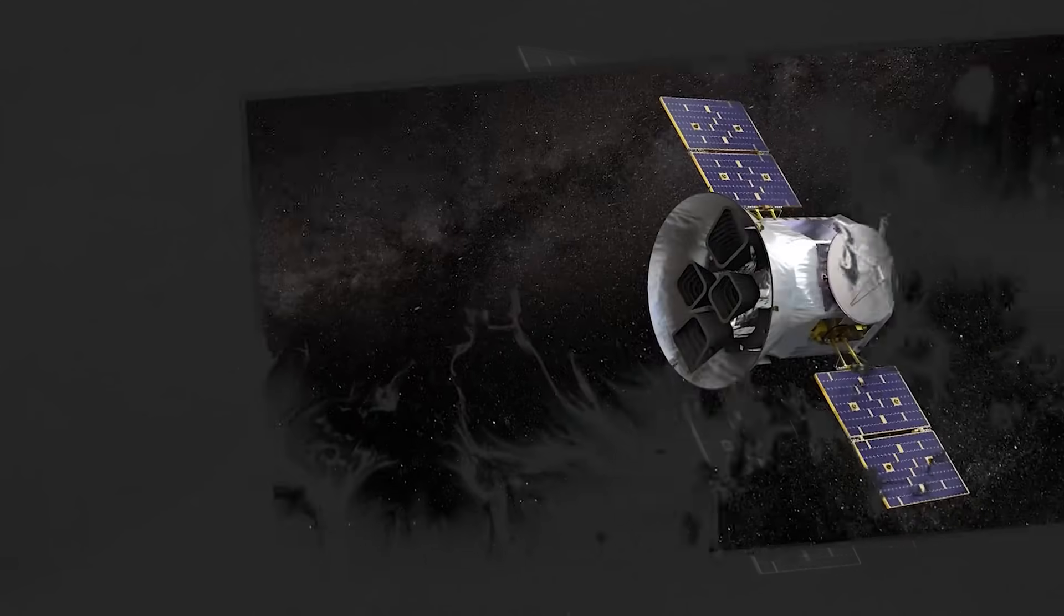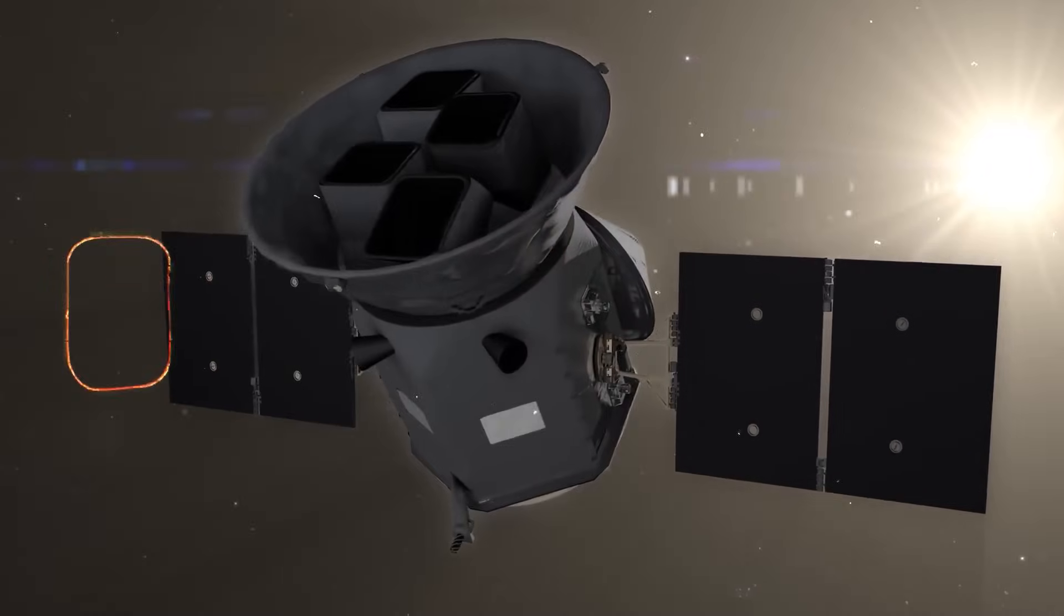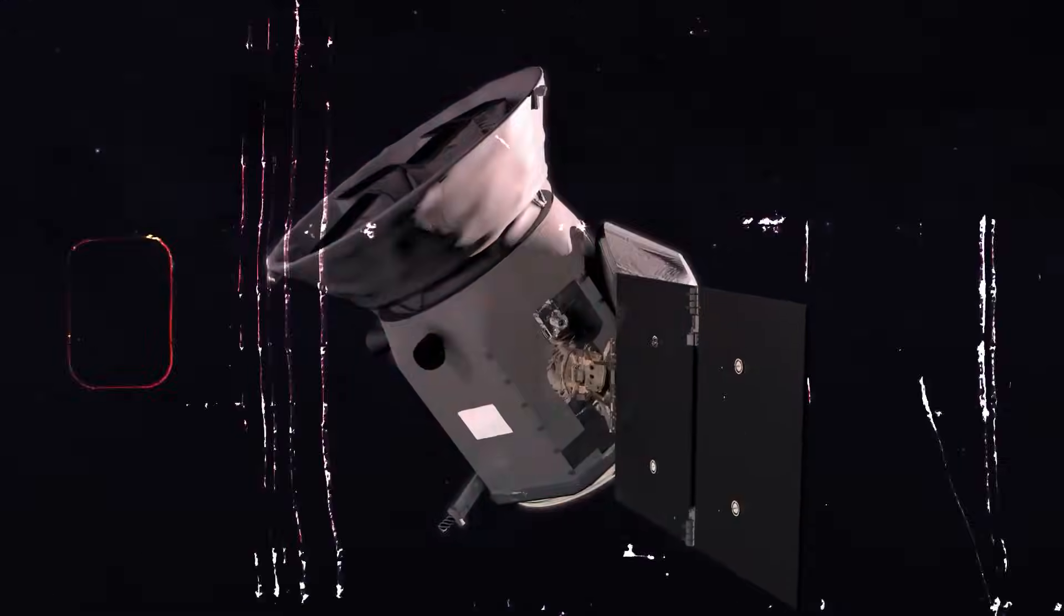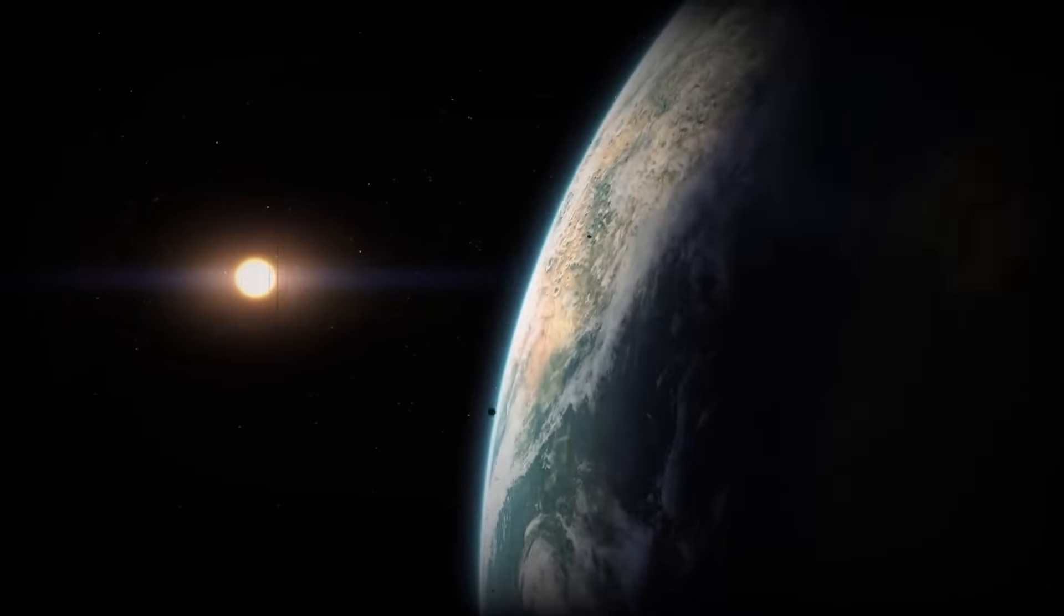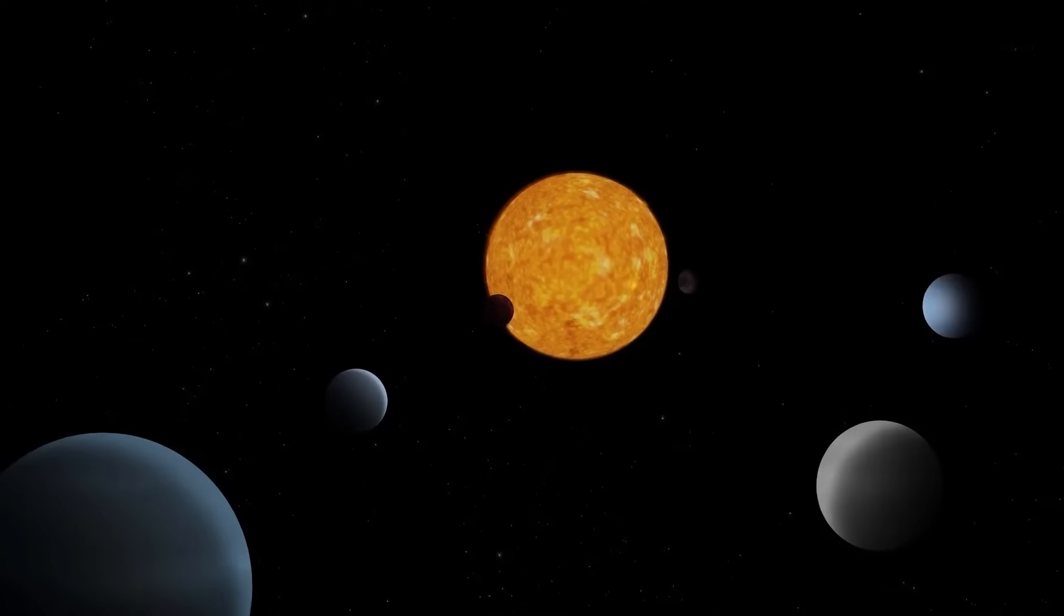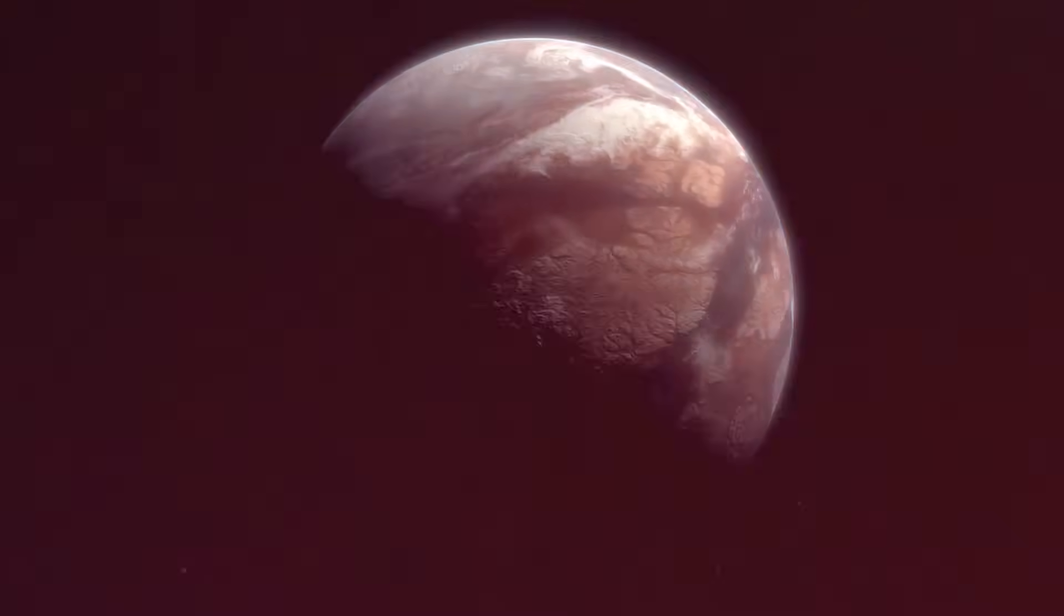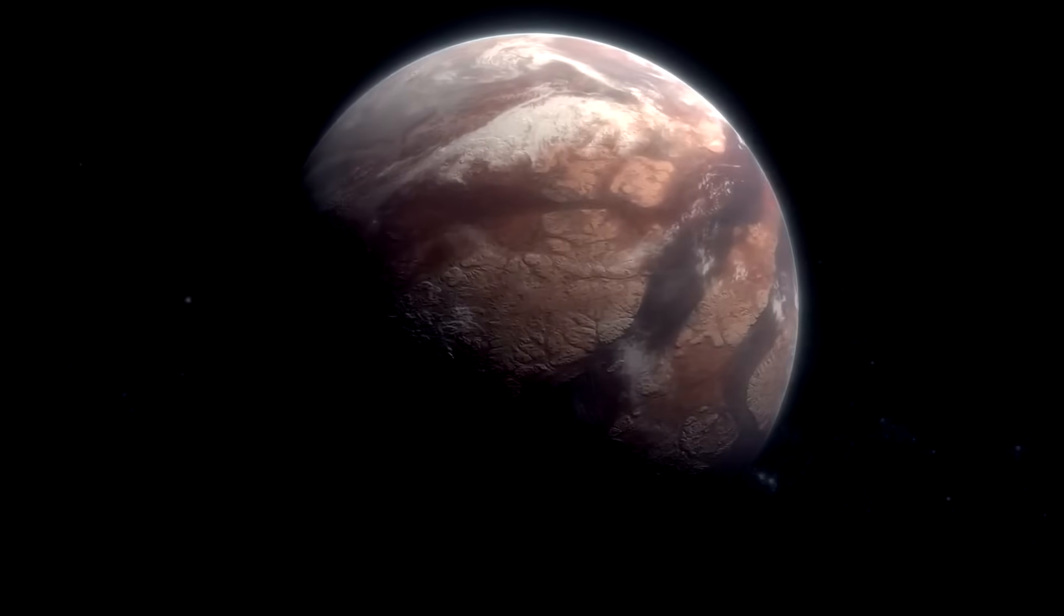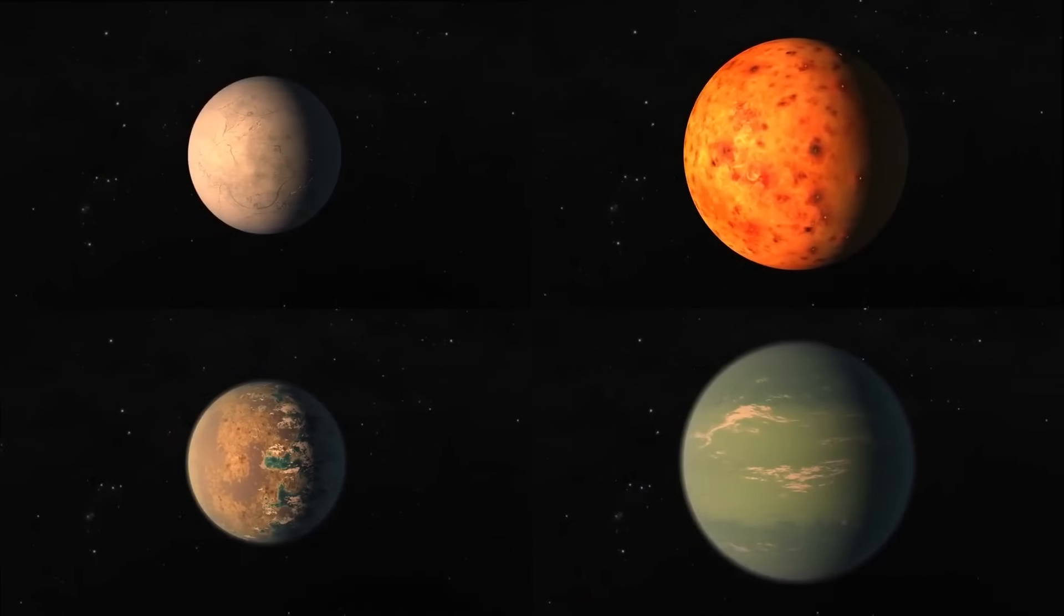The discovery was made possible by NASA's TESS, the Transiting Exoplanet Survey Satellite, which scans the sky for small dips in starlight caused by planets crossing in front of their stars. Without it, the quiet whispers of TOI-700 might have gone unheard. TOI-700 has gone from an anonymous star to a headline-making planetary system, reminding us that the universe might be far more crowded with life-friendly worlds than we ever imagined.